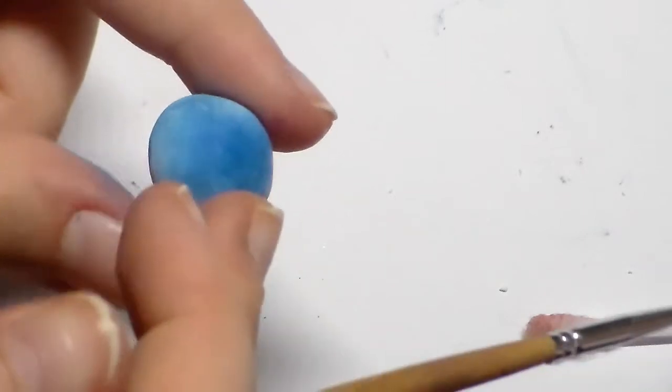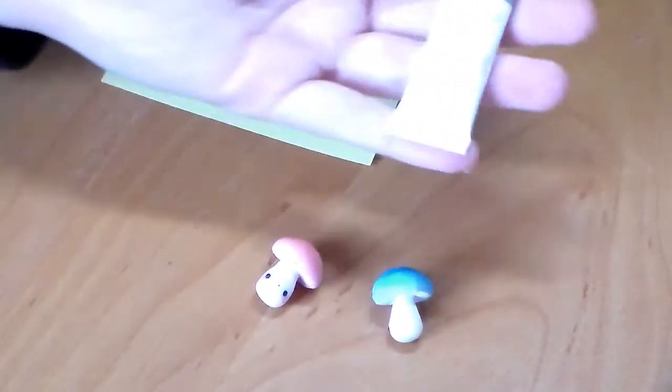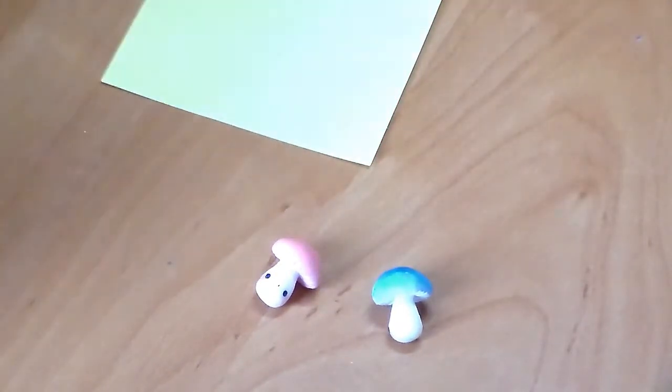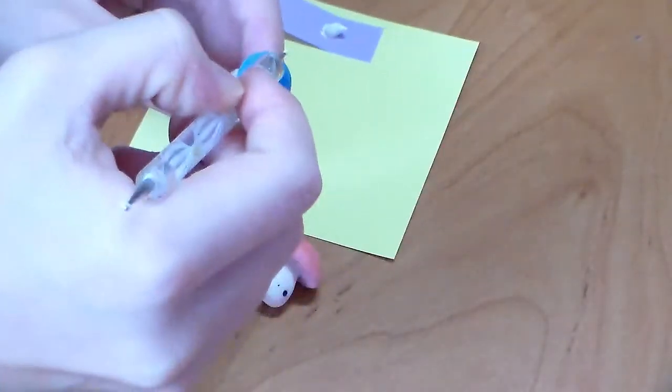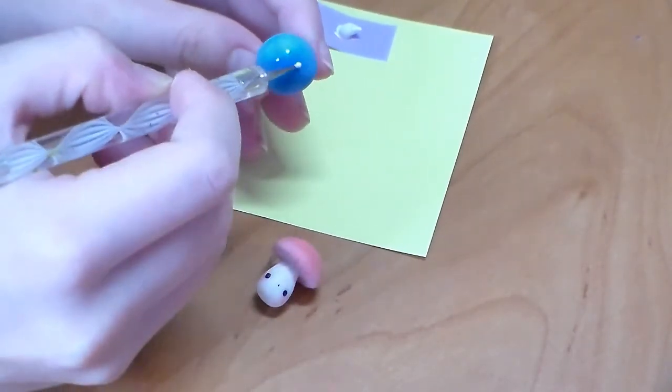Now after baking the little mushroom you will need some white acrylic paint and a dotting tool. And with the dotting tool add many little white dots on top of the dome shaped clay piece, like this you can see.